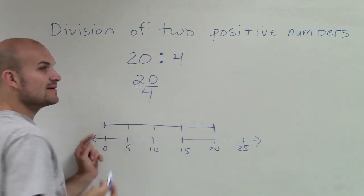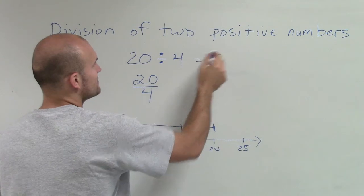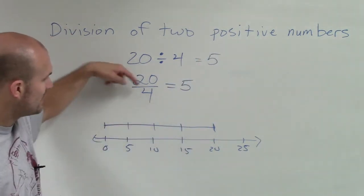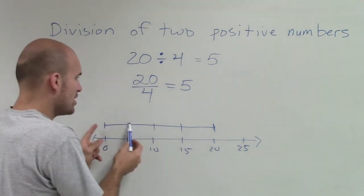So 20 divided by 4 equals 5. OK? So 20 broken up into 4 equal parts, the distance of each one of those parts is 5.